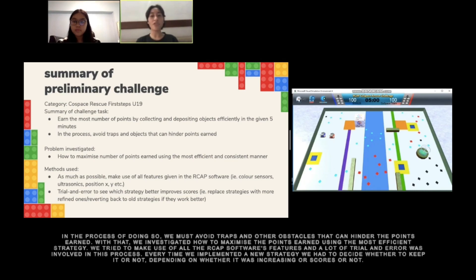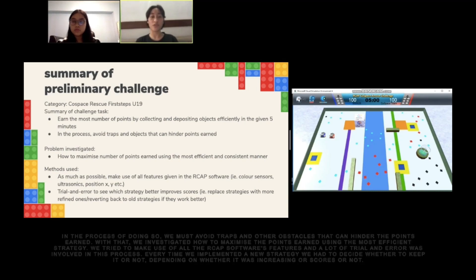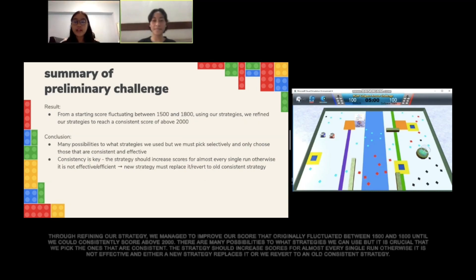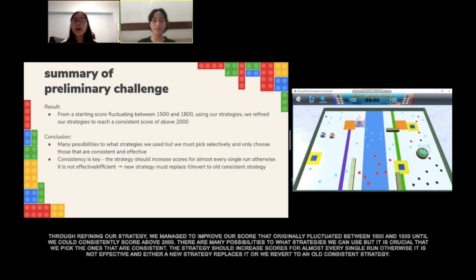We tried to make use of all the archetypes of cross-earned features, and a lot of trial and error was involved. Every time we implemented a new strategy, we had to decide whether to keep it depending on whether it increased our score. Through refining our strategy, we managed to improve our score that originally fluctuated between 1,500 and 1,800 until we could consistently score above 2,000.